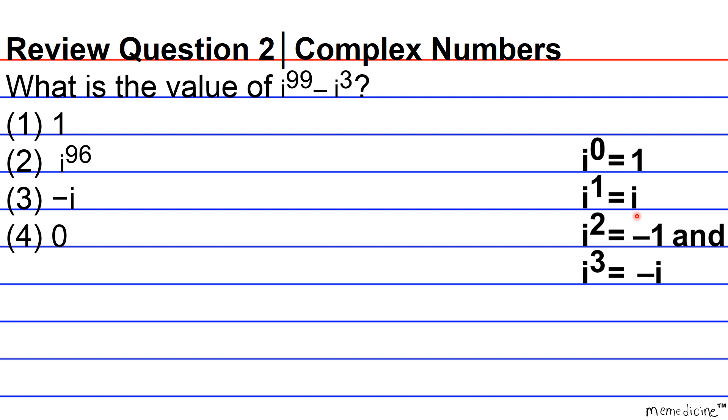Successive powers of i after i raised to 3 are just going to repeat the pattern of 1, i, negative 1, and negative i. So for any whole number power of i greater than 3, in this case we have the exponent 99, we can find the result of this exponential expression by raising the base i to the remainder of the exponent divided by 4. That's what we're going to do here.